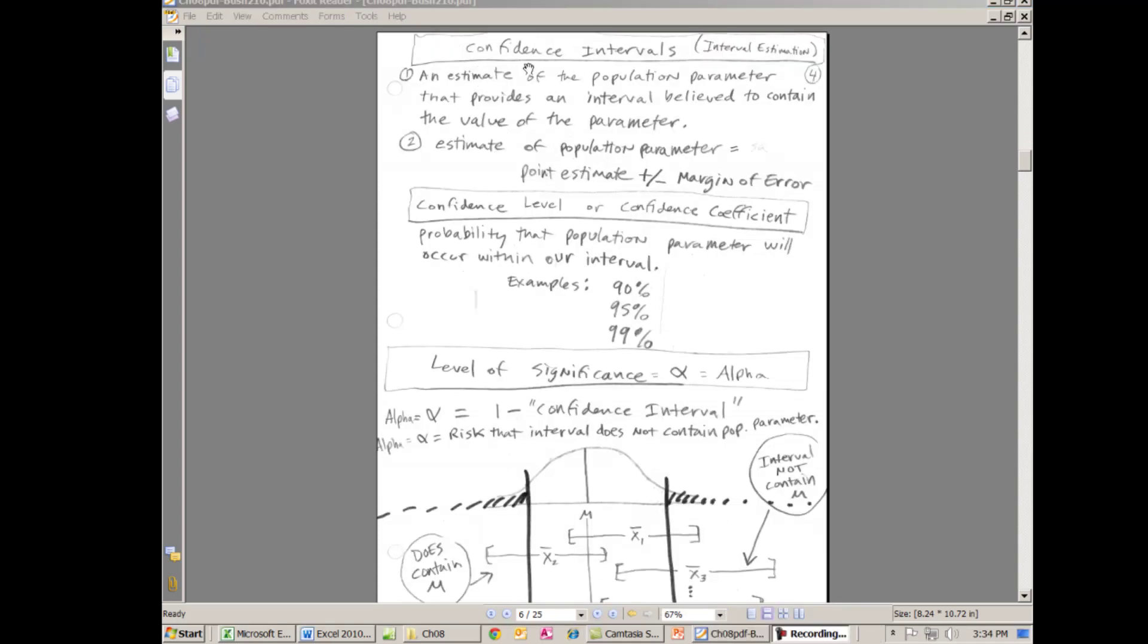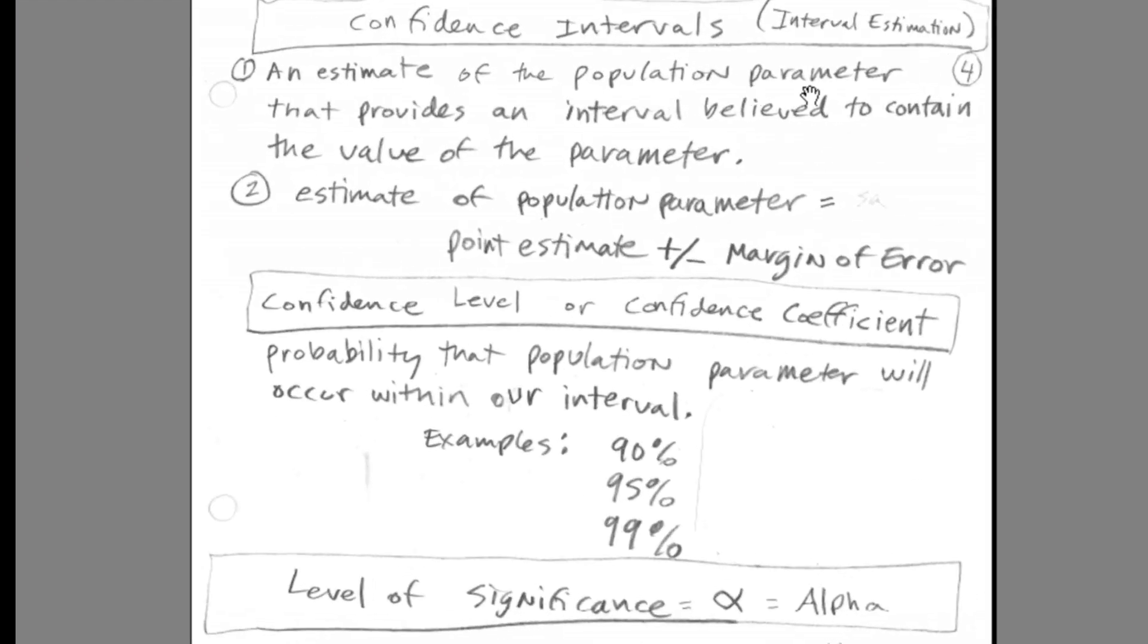Here's our formal definition of confidence interval, an estimate of the population parameter that provides an interval believed to contain the value of the parameter. Our formula in the general form will be this. Point estimate, plus or minus a margin of error. So for x bar, we'll calculate our x bar, plus or minus, and we'll learn how to calculate the margin of error in just a moment.